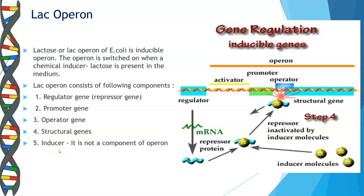The next component is the inducer. As told earlier, this is not a part of the operon but it is required for the functioning of your operon. It is a chemical in the cytoplasm which inactivates the repressor. The repressor normally binds to your operator region and does not allow these structural genes to be transcribed. But when this inducer is present, it blocks the repressor so the repressor cannot bind the operator and the operator region is free. When the operator region is free, the RNA polymerase can easily bind here and transcribe these structural genes. In the case of lactose operon, the lactose molecule acts as an inducer.